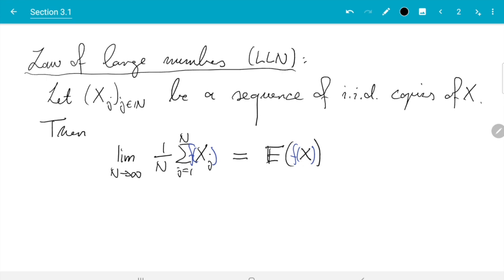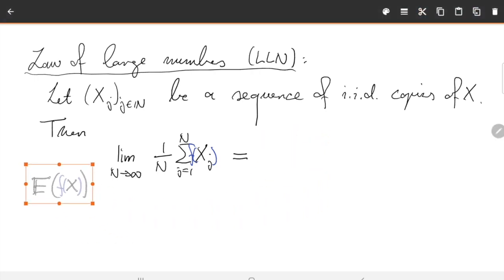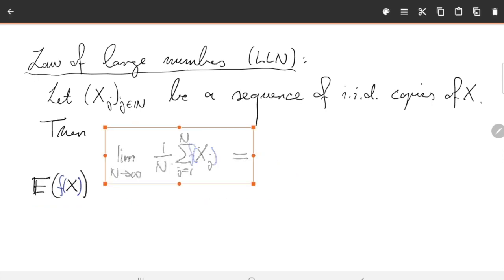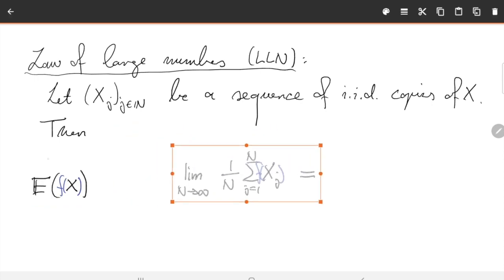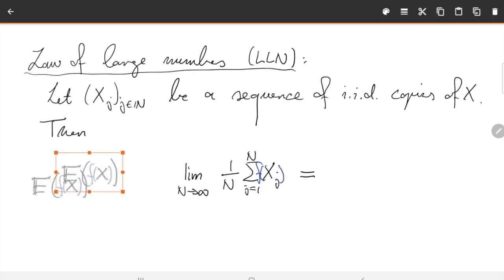That is normally used in the form I've written it here. So you start with the sequence of independent random numbers, and then you ask what happens for large n. And the answer is if n increases, it goes for the expectation. But here we can use the same thing in kind of reverse order. Let me just rearrange this.